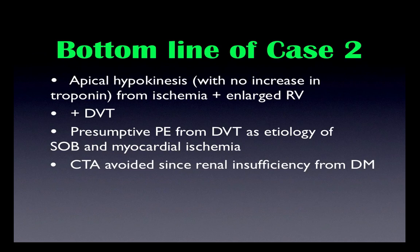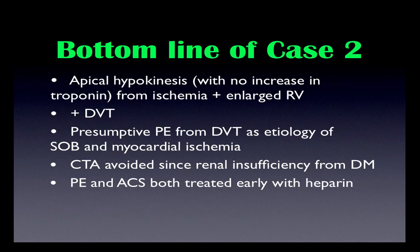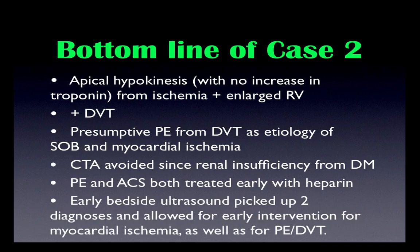The CTA was avoided, which is quite good since this patient had renal insufficiency from his diabetes. Pulmonary embolism and acute coronary syndromes are both treated early with heparin. This patient's primary problem ended up being the pulmonary embolism — the patient had no further EKG changes, and the nonspecific changes went away. The apical hypokinesis and the enlarged right ventricle also resolved later on. So in this case, early bedside ultrasound picked up two diagnoses and allowed for early intervention for both the myocardial ischemia, which was presumably secondary to the primary diagnosis, and the primary diagnosis of pulmonary embolism secondary to deep vein thrombosis.